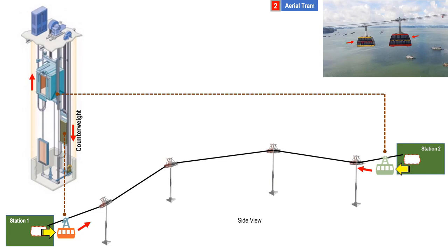In an elevator, there are numerous stops between the top floor and the ground floor. In an aerial tram, there are only two stops at the two end stations.